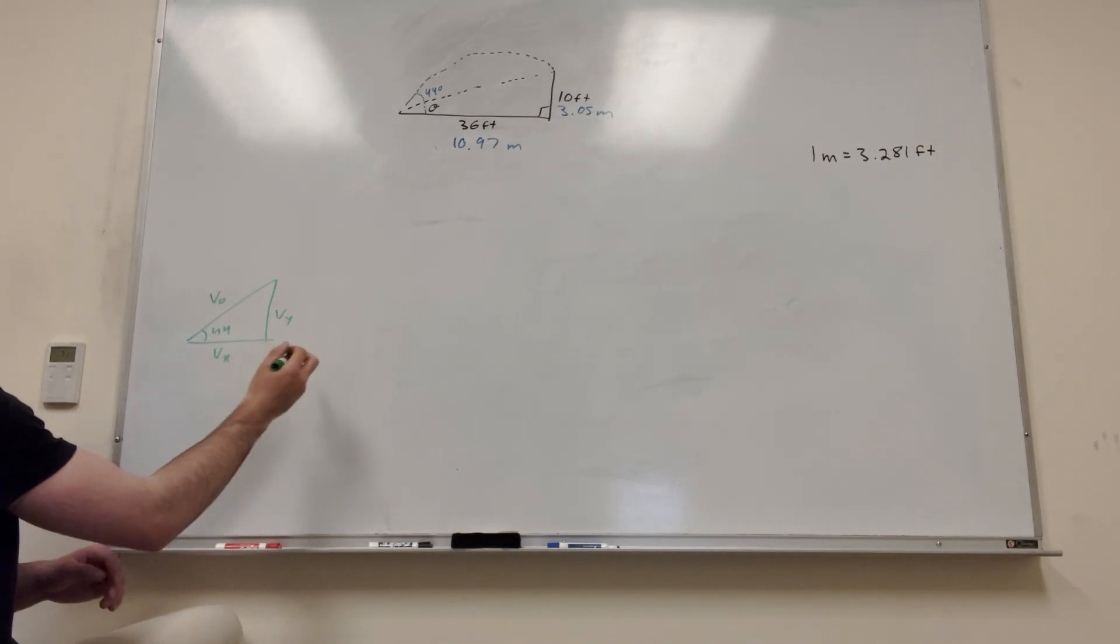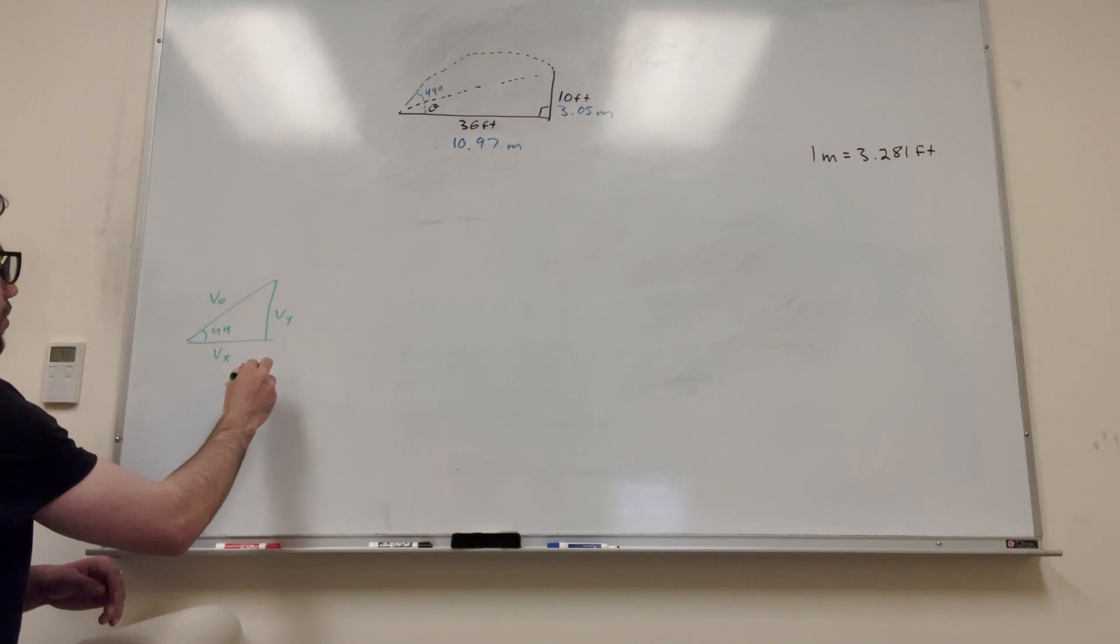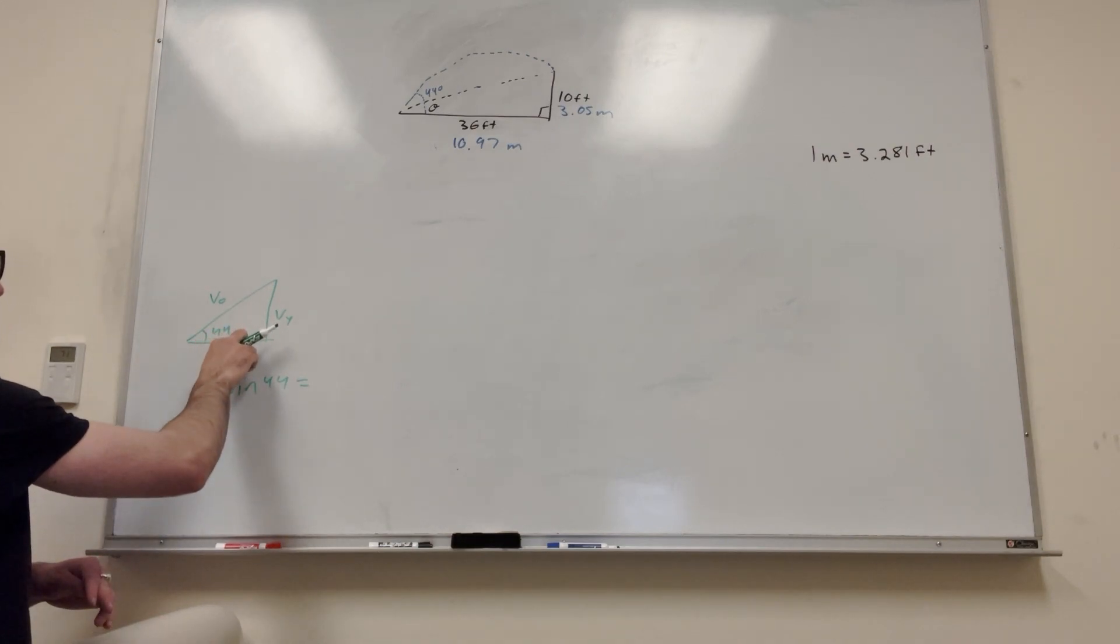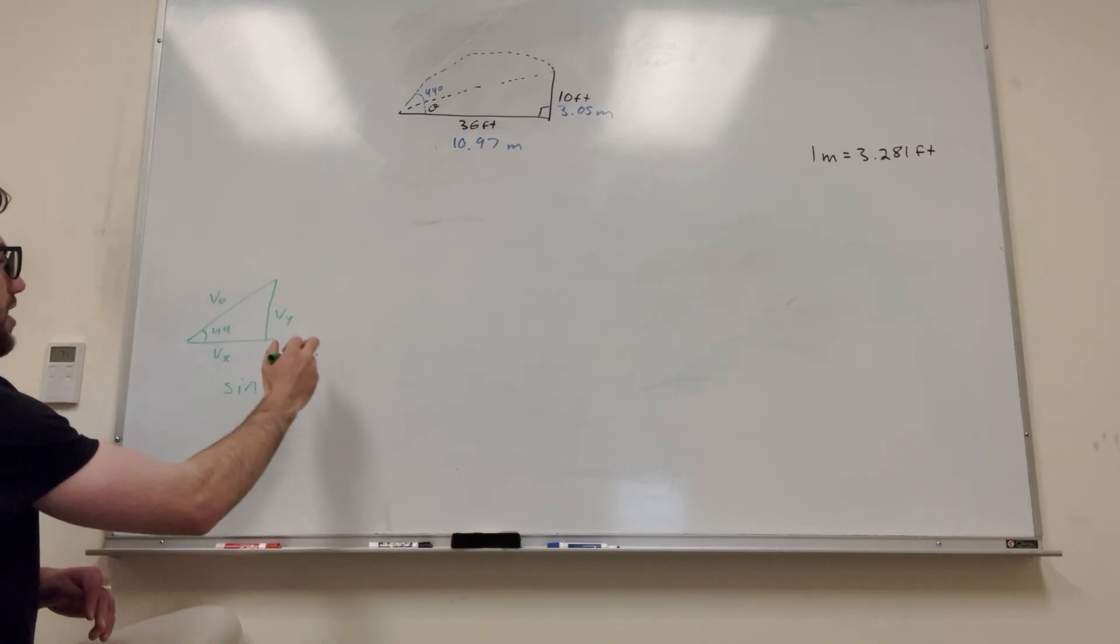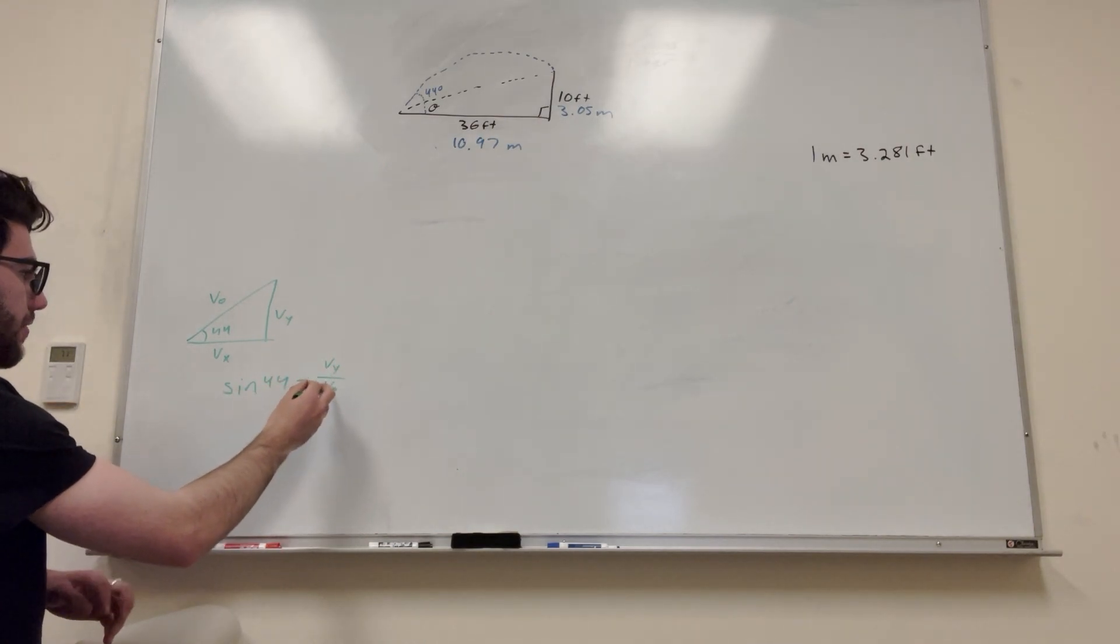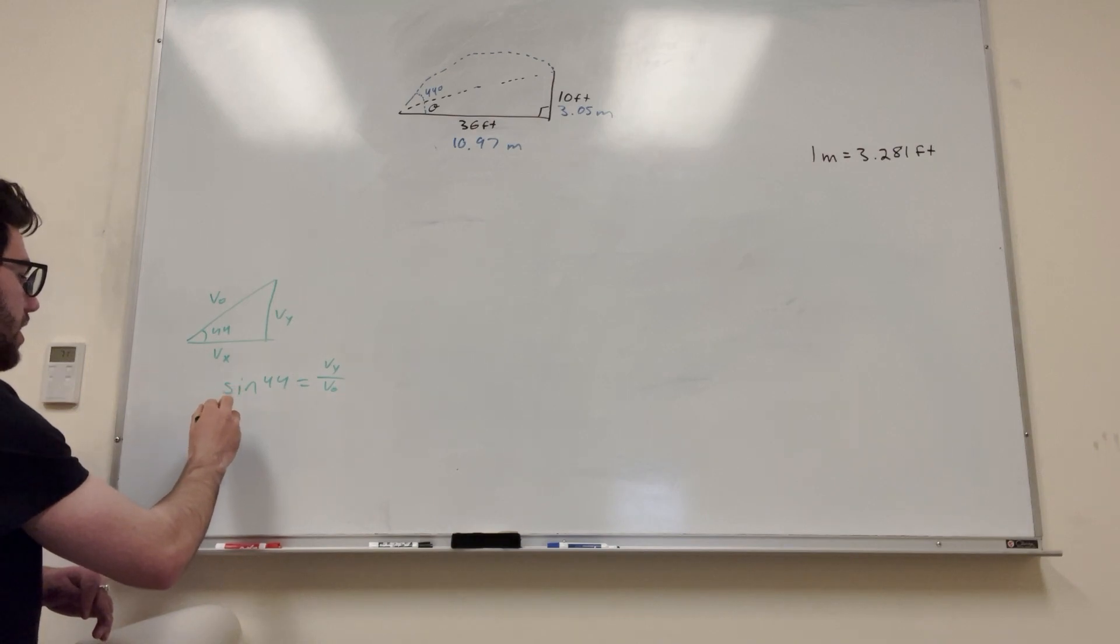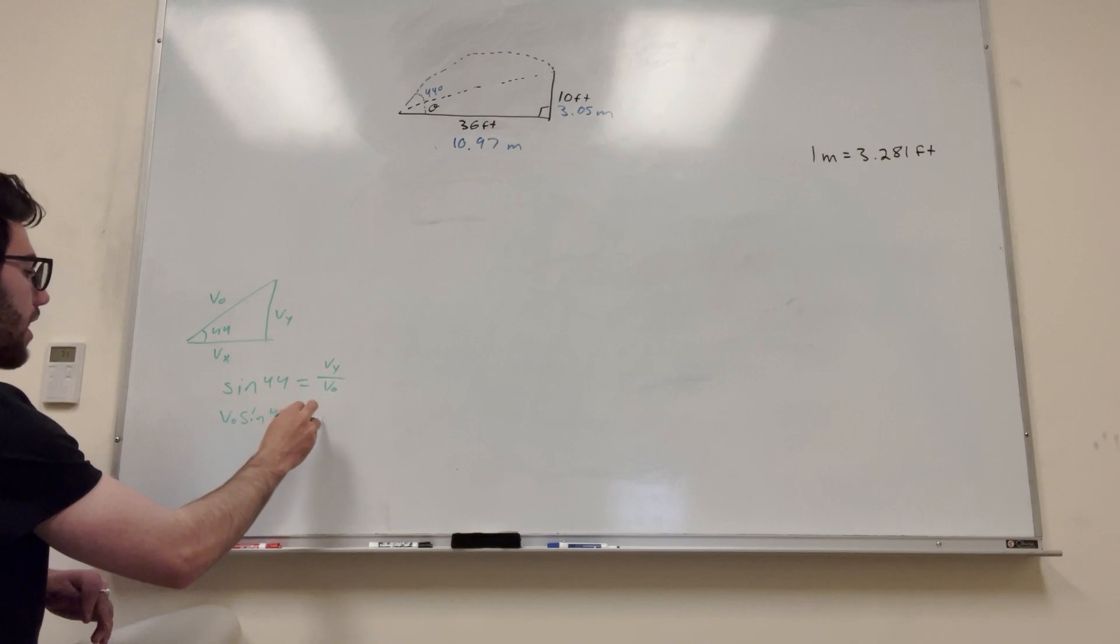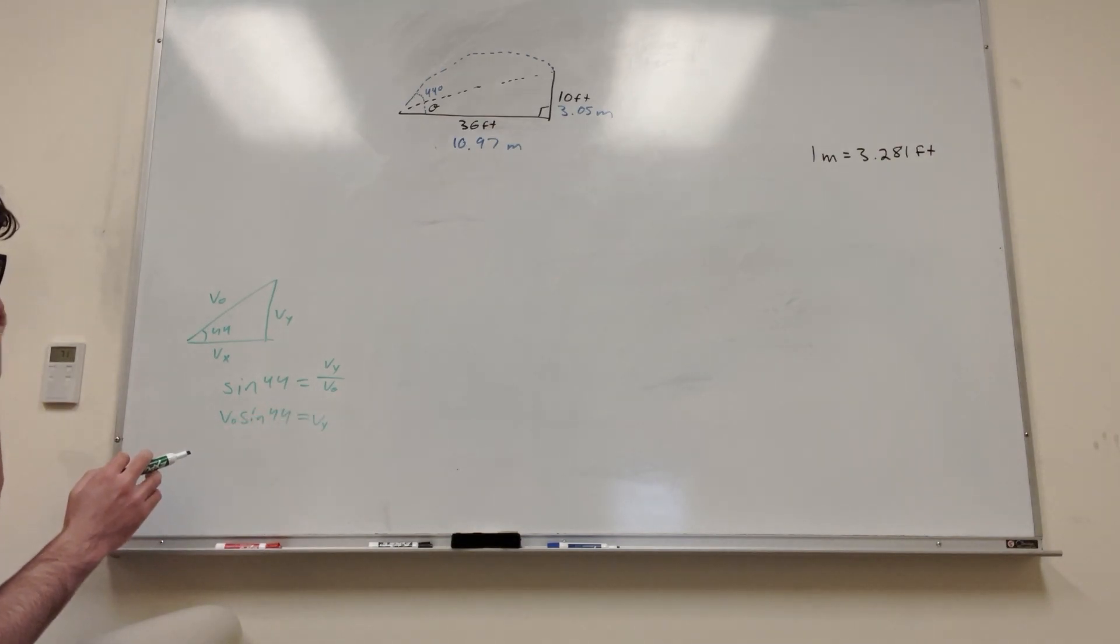And we want to know basically how can we represent these in terms of V-naught and sine and cosine. So V of Y, what we know is sine of 44 is going to be equal to opposite over hypotenuse. So that's V of Y over V-naught. And then what we can do is we can move V-naught to the other side. So V-naught sine of 44 is equal to V of Y. That makes sense to me.